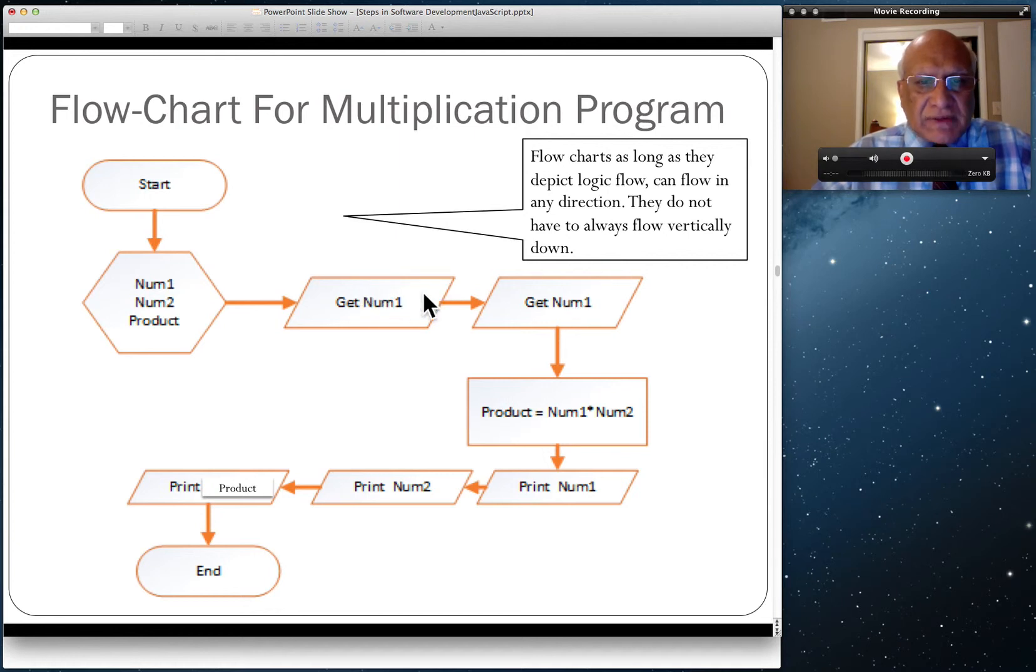Once we got Num1 and Num2, we have a memory location Product. In that, we multiply Num1 and Num2 and store the value back in Product. Then we print Num1, print Num2, and print the Product, and end. That's a high-level view—it doesn't tell you what words we're going to use when we print this. That will be filled in later.